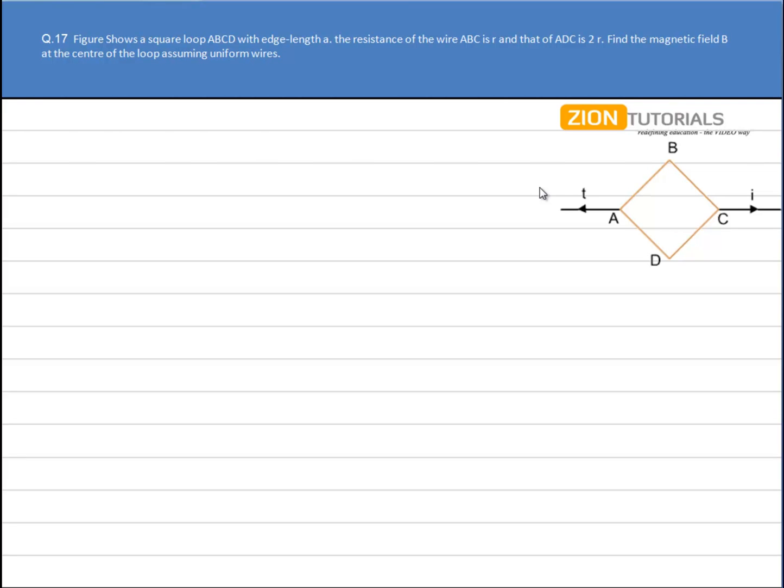Now we have a square loop ABCD with an edge length of A. The resistance of the wire ABC is R and ADC is 2R. Find the magnetic field B at the center of the loop assuming uniform wires.